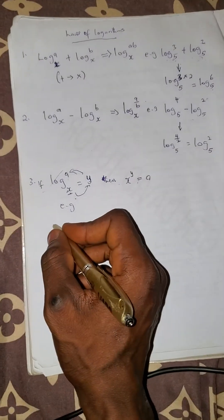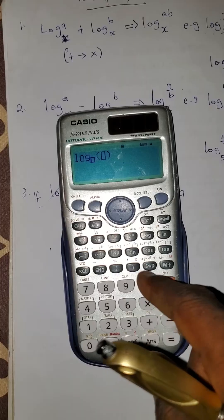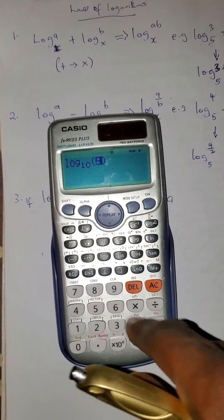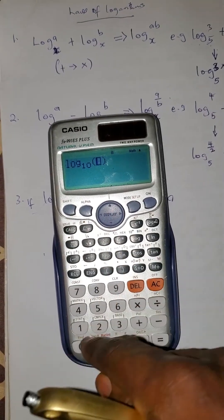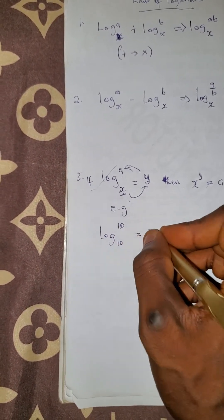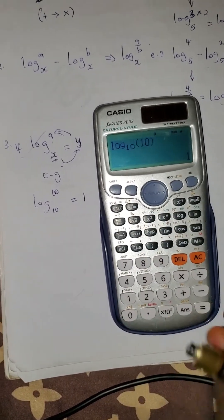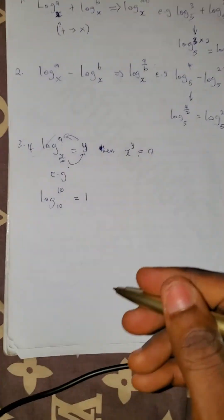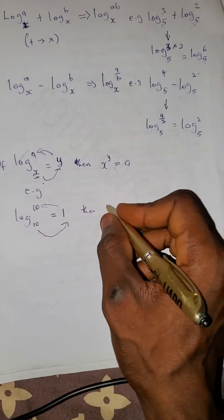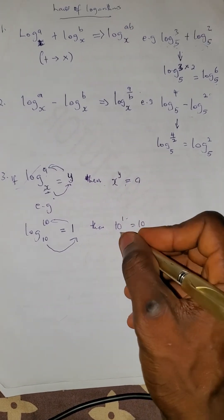For example, everybody knows that log 10 base 10 equals 1. If you press it on your calculator, log 10 base 10 is 1. Using this law, that means 10 raised to the power 1 equals 10 — which is correct.